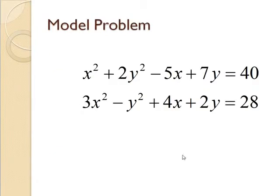So here's our model problem. It's a system of two nonlinear algebraic equations in two unknowns. So one equation is x squared plus 2y squared minus 5x plus 7y is 40, and then the other one is shown here.